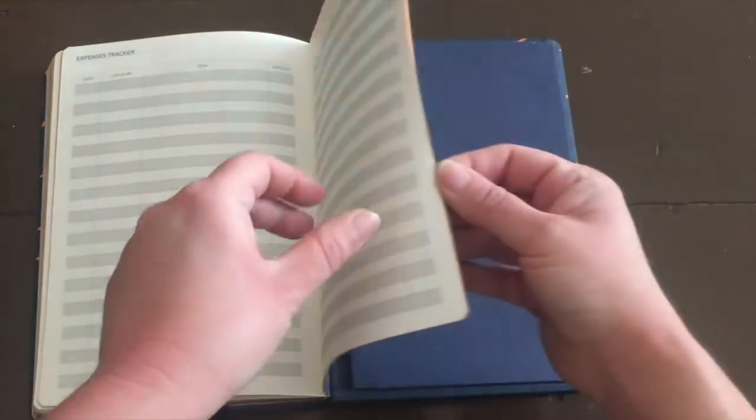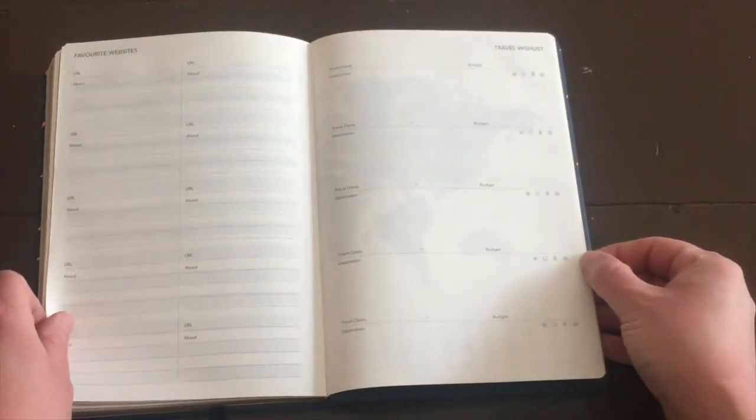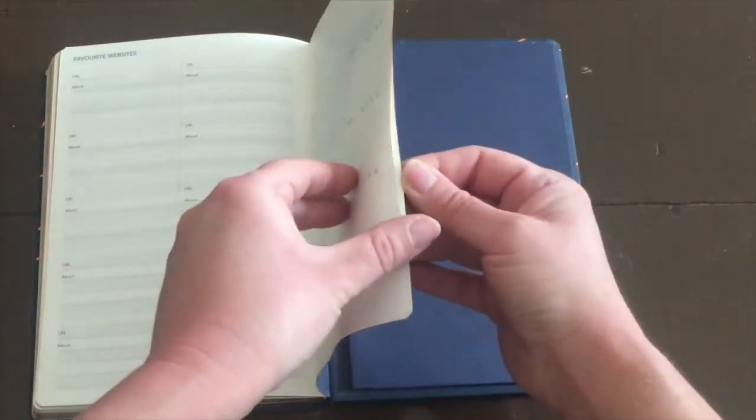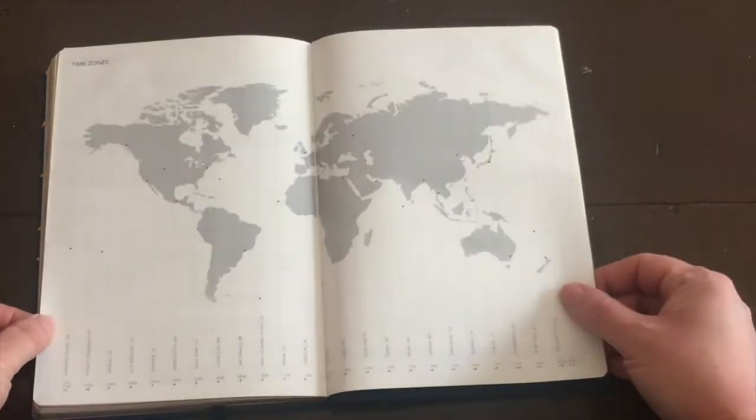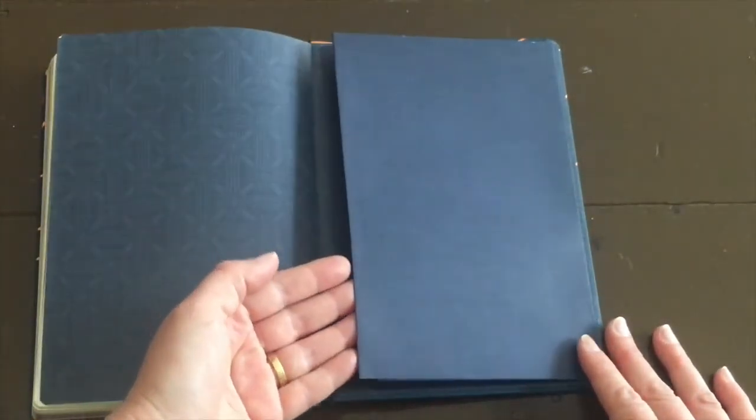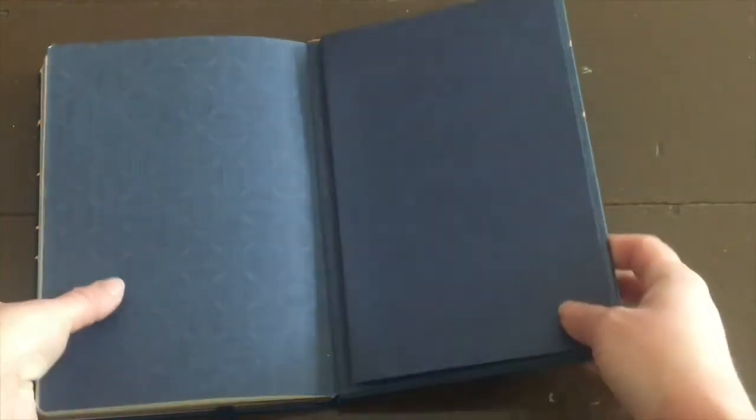And then once you've gone through all of those pages, you'll see at the very end this one too has a handy little pocket. So when you go through to the end, you can put any of your school notes or your shopping list or bills that you need to pay.